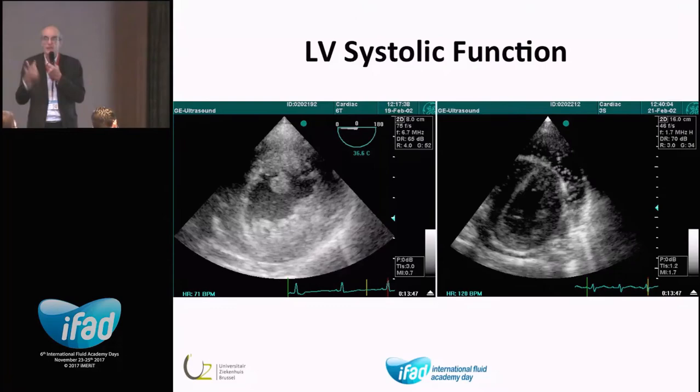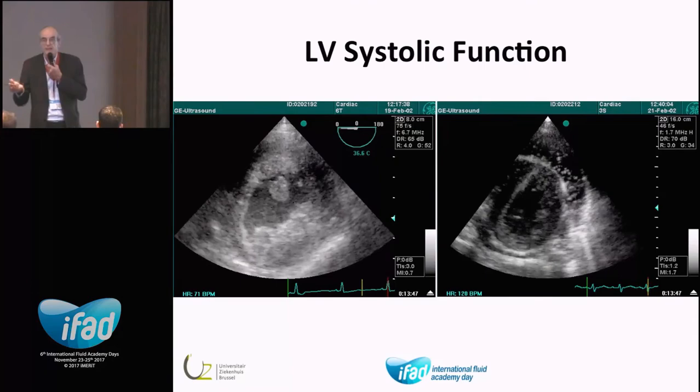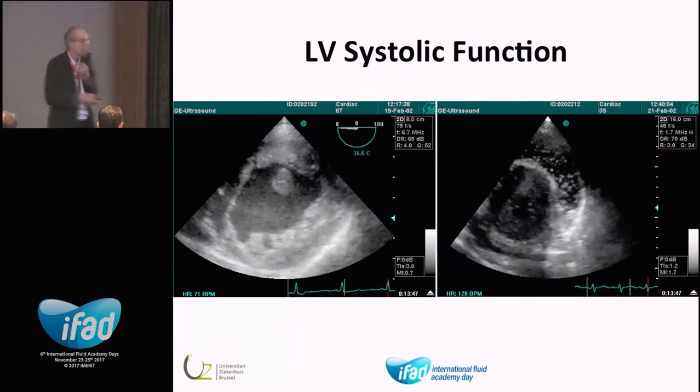If you look at the short axis view, it gives you information about global systolic function, presence of regional wall motion abnormalities, presence of pericardial fluid, and right ventricular dilatation. Left ventricular end-diastolic area is a measure of preload as a static parameter. So it gives you a lot of information already just by putting the probe in a parasternal short axis view.